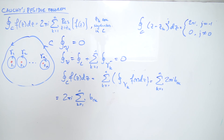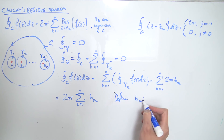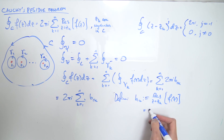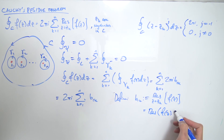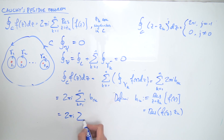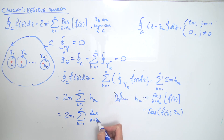We define B sub 1K as the residue at Z equals Z_K of the function F of Z — sometimes written as Res(F of Z, Z_K). The reason it's called the residue is that it's the one term that survived the contour integration in the Laurent series, because all other coefficients gave zero. Since we've defined B sub 1K as the residue, we can finally say the contour integral over C equals 2πi times the sum from K equals one to N of Res(F of Z) at Z equals Z_K — and hence we've proven Cauchy's residue theorem.